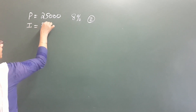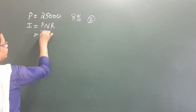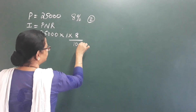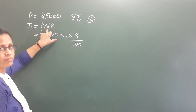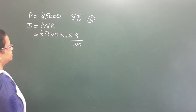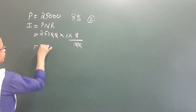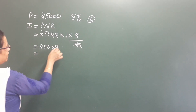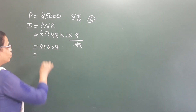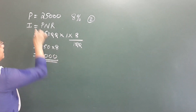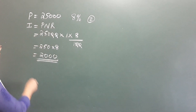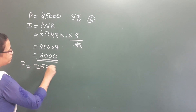Interest is equal to PNR by 100. The principal amount is 25,000, number of years for the first year is 1, rate of interest is 8 by 100. So 25,000 into 1 into 8 by 100: 25 into 8 is 200, so the first year interest is 2,000 rupees.